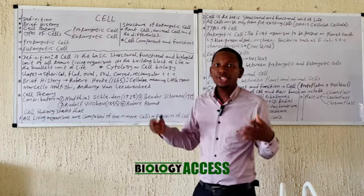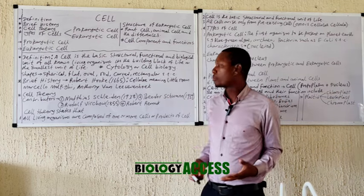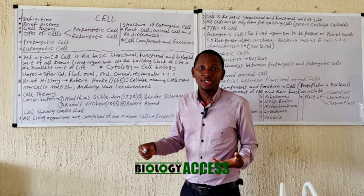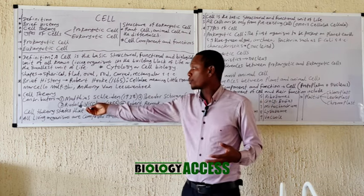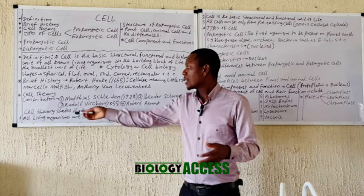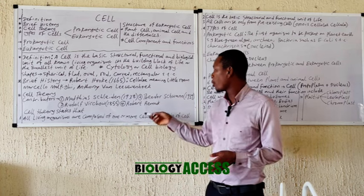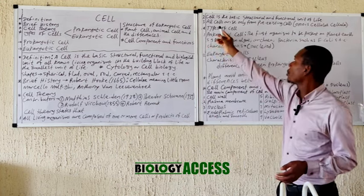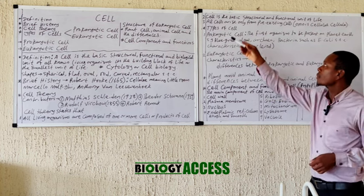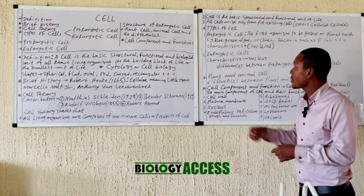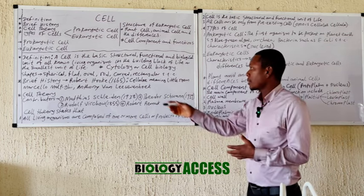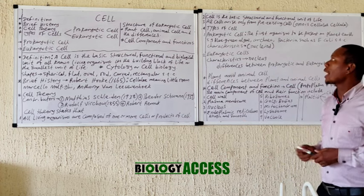We also have Rudolf Virchow, who stated that cells come from pre-existing cells, though some historians contend that Robert Remak was actually the one who made that statement and that Virchow plagiarized it without credit. The cell theory states: first, all living organisms are composed of one or more cells or products of cells; second, cell is the basic structural and functional unit of life; and third, all cells arise from pre-existing cells.